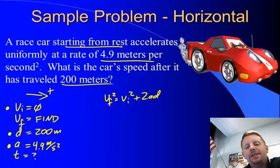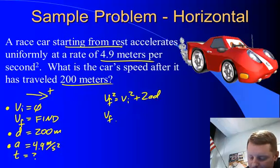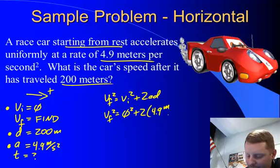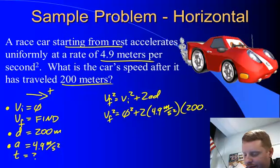Our next step then is to substitute in our givens with units. So VF squared equals VI squared, VI is 0, so that's 0 squared plus 2 times A, 4.9 meters per second squared times D, 200 meters.